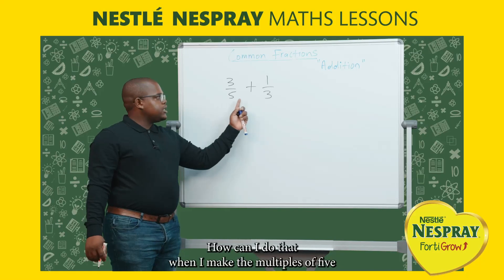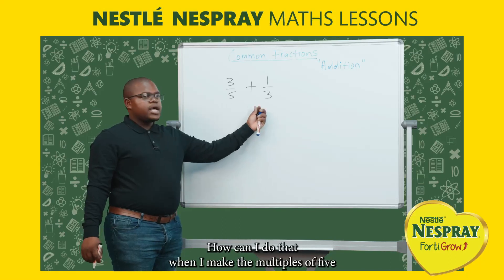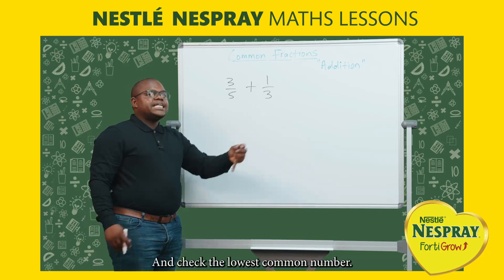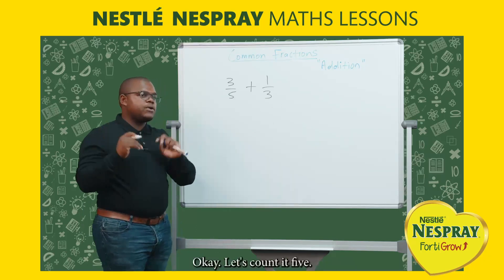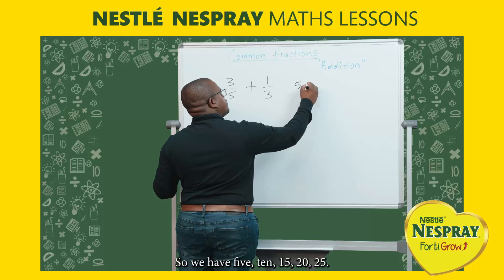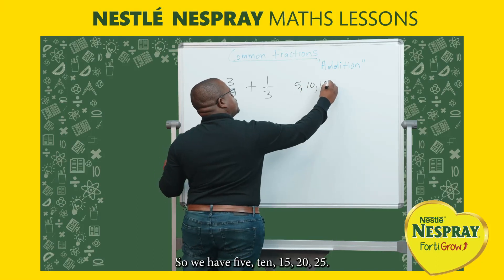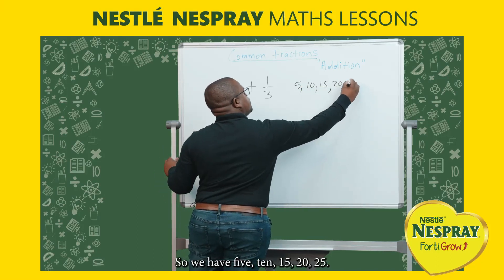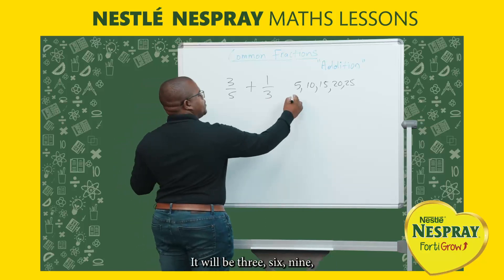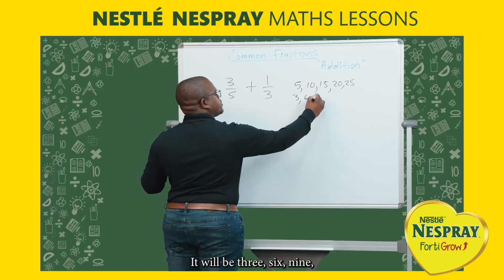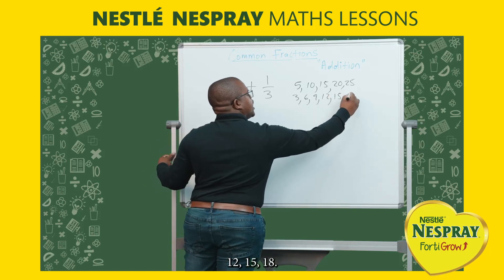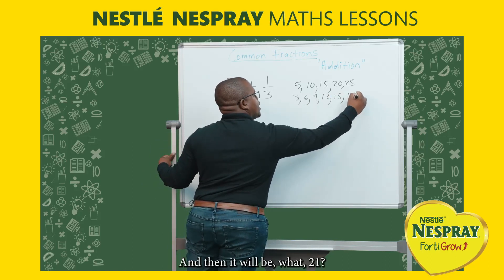To make them the same, I find the multiples of 5 and the multiples of 3, then check the lowest common number. Multiples of 5: 5, 10, 15, 20, 25. Multiples of 3: 3, 6, 9, 12, 15, 18, 21.